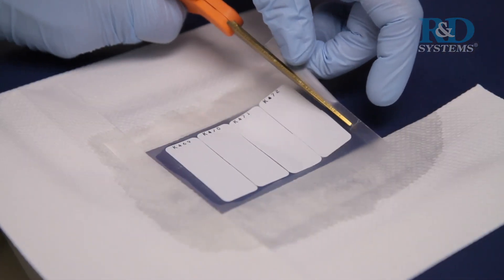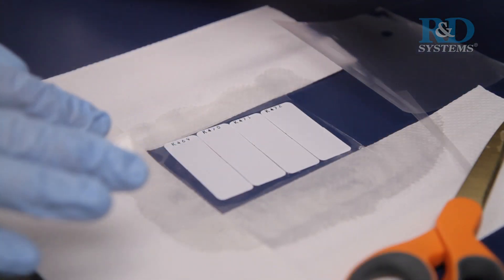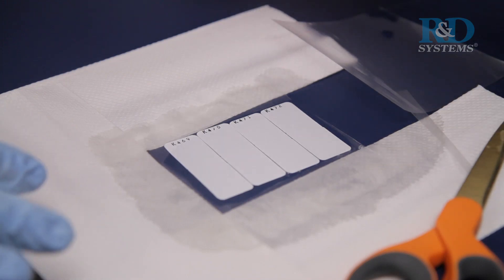Remove the top plastic sheet protector and carefully lay an absorbent lab wipe on top of the membranes to blot off any remaining chemireagent mix.